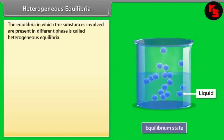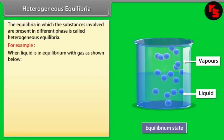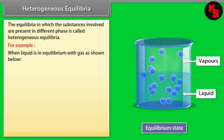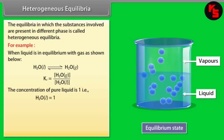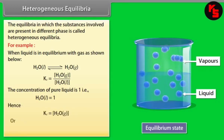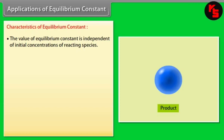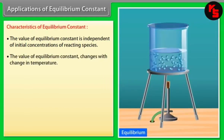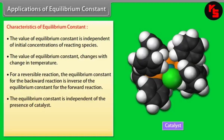Heterogeneous Equilibria. Equilibria in which the substances involved are present in different phases are called heterogeneous equilibria. For example, when a liquid is in equilibrium with a gas, the concentration of the pure liquid is taken as 1, so the concentration of H₂O in liquid form equals 1 and is excluded from the equilibrium constant expression.